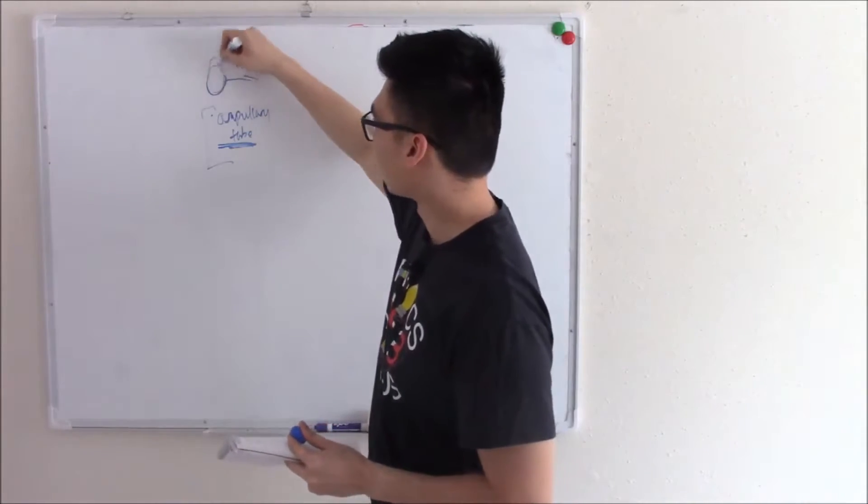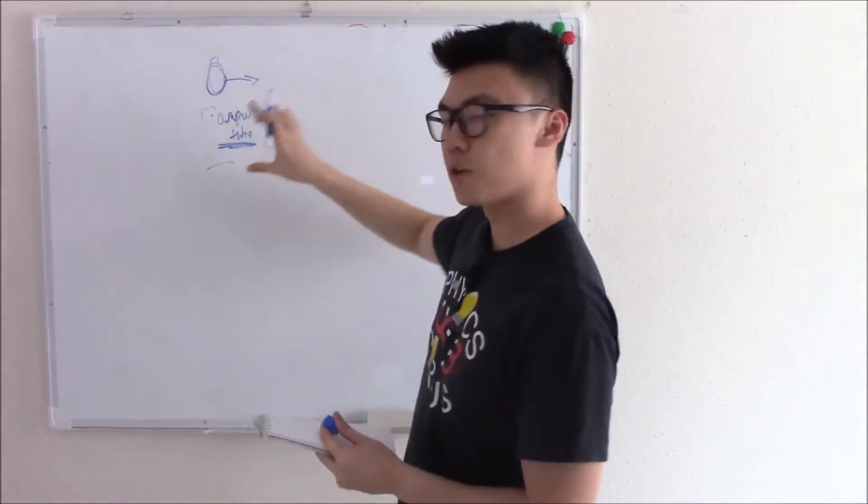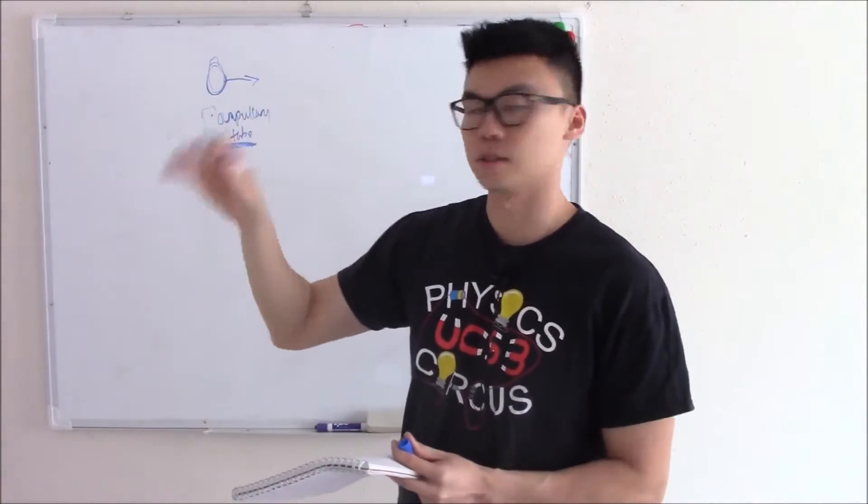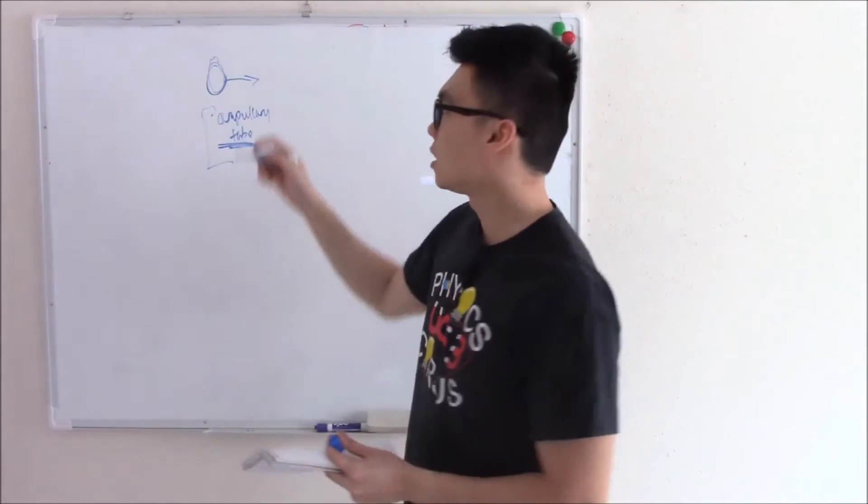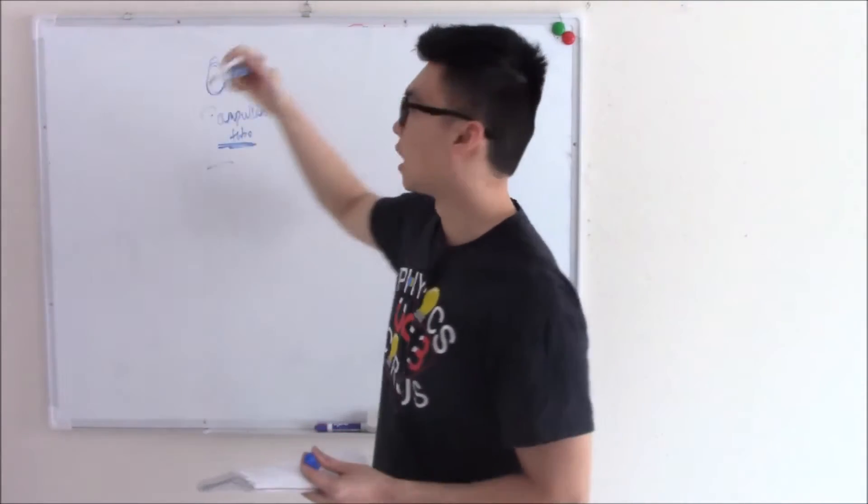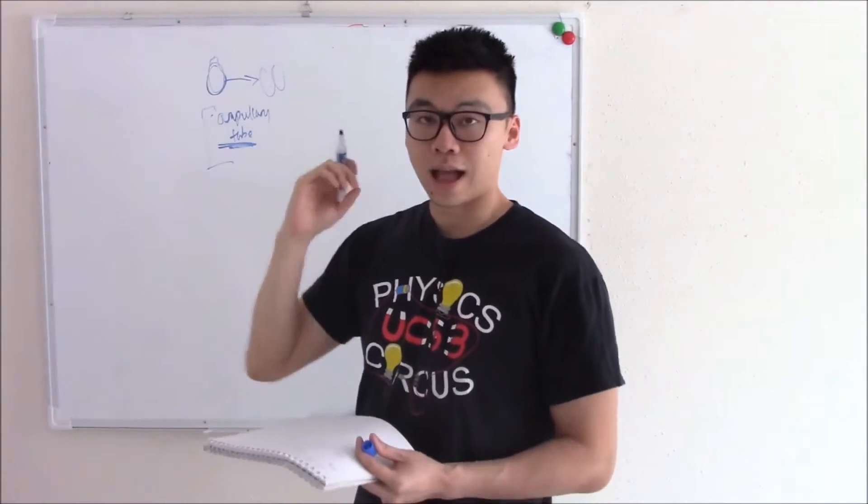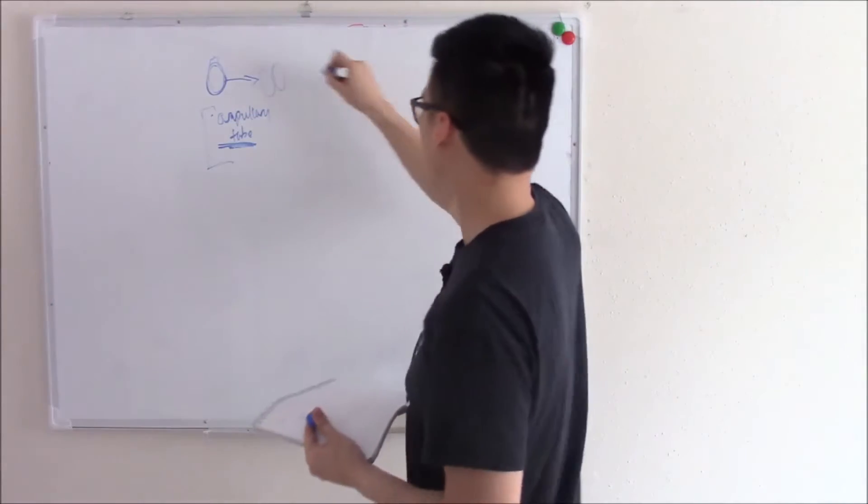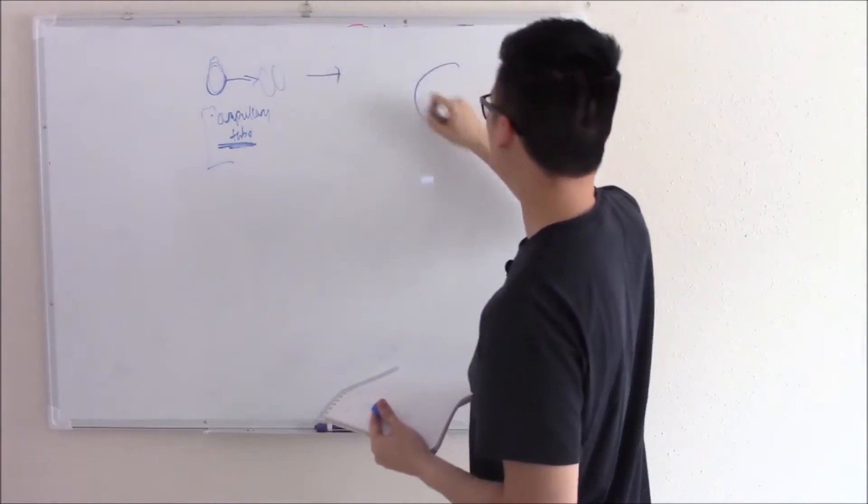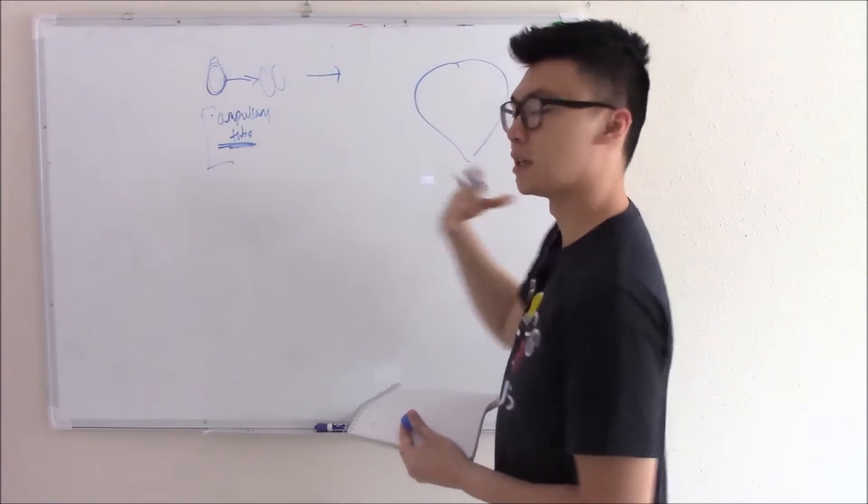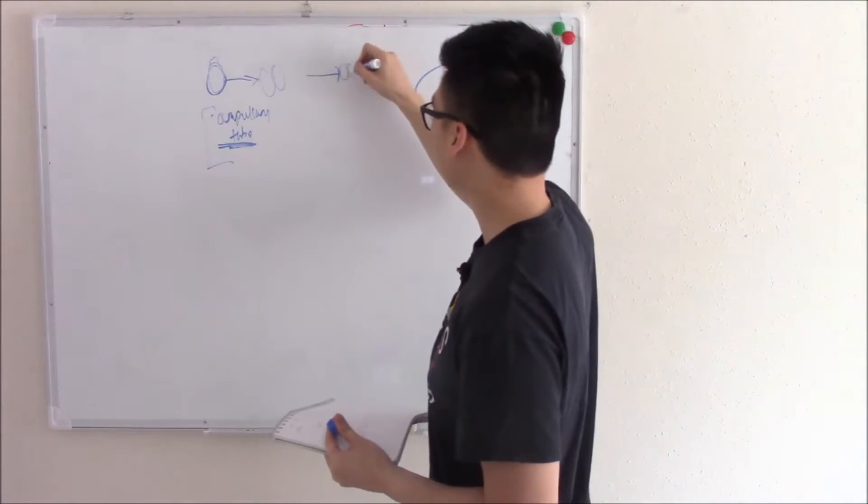So it's now fertilized and in the tube, it'll start to beat down towards the uterus. But it doesn't waste any time. As soon as it's fertilized, it'll start to divide. One cell turns into two, turns into four, etc., as it's traveling down the tube towards the uterus. Doesn't waste any time, it starts dividing right away.